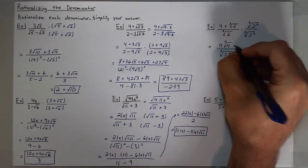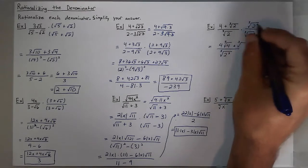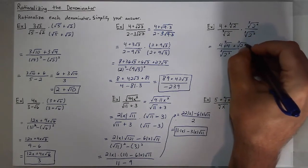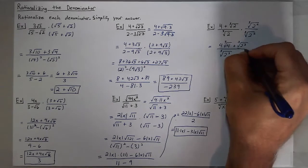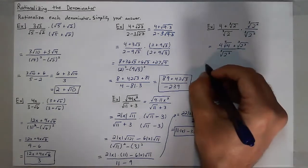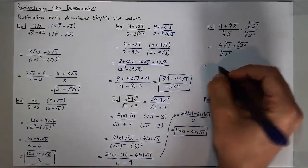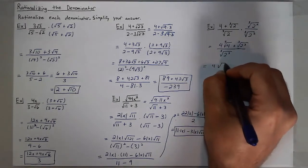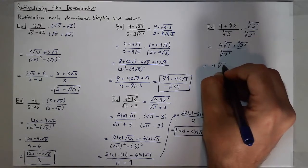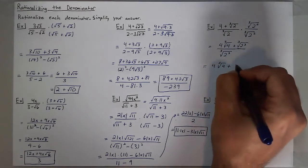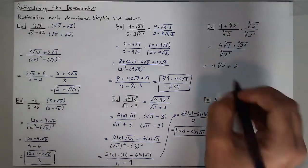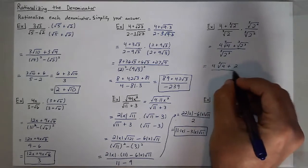Plus the cube root of 2 to the first times 2 to the second, which is 2 to the third. Now I can simplify everything: that gives me 4 cube roots of 4 plus just 2, because the cube root and the cube cancel, over 2.